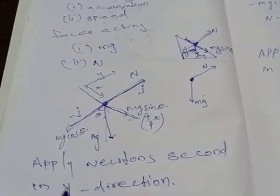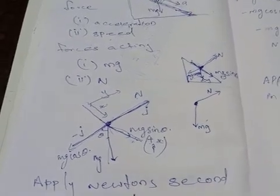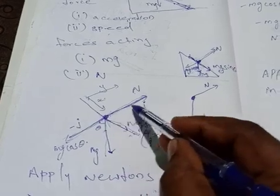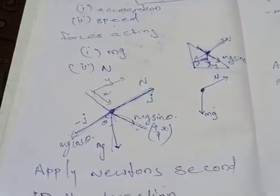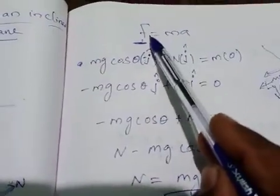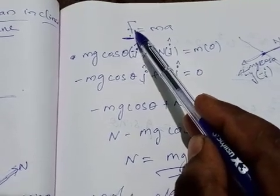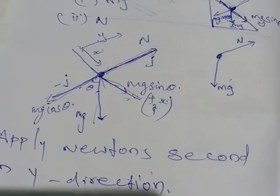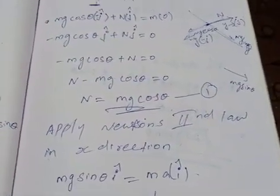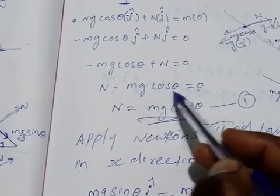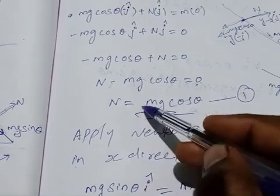Now we apply Newton's second law in the y direction. Normal force is in positive y direction using j unit vector; negative y axis uses minus j unit vector. Total force: mg cos theta into minus j plus normal force N into j equals zero, since acceleration in y direction is zero. Comparing the component values: minus mg cos theta plus N equals zero. Rearranging: N minus mg cos theta equals zero, therefore N equals mg cos theta. Y direction is finished.